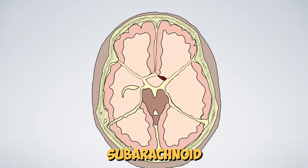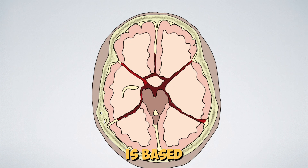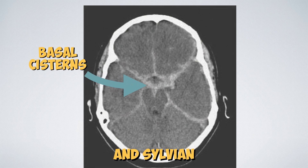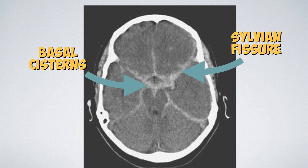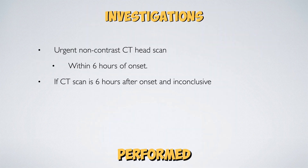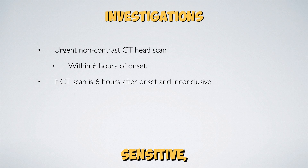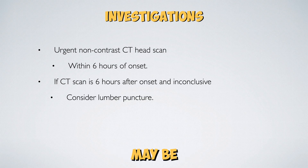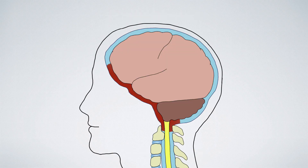Confirmation of subarachnoid haemorrhage is based on the detection of hyperdense blood in the basal cisterns and sylvian fissures. A CT scan performed after 6 hours is less sensitive, and if the scan is inconclusive, a lumbar puncture may be considered to check for xanthochromia.